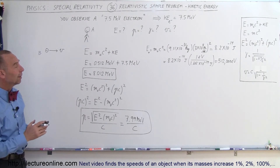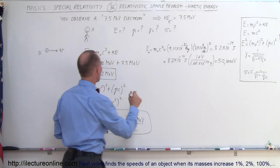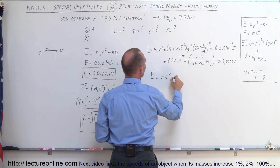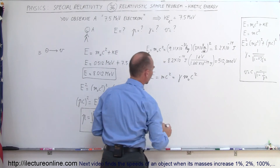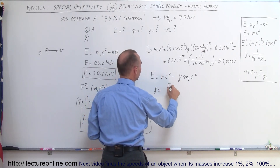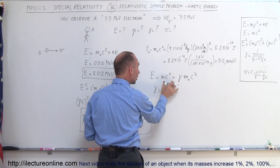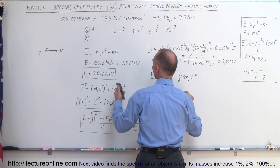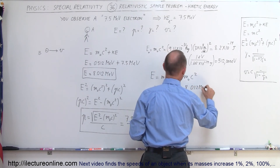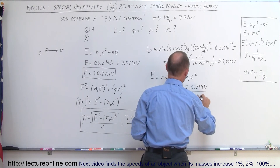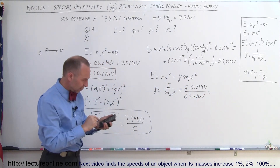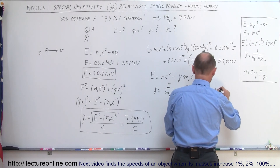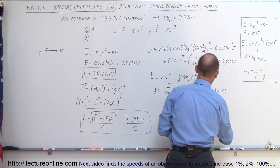Next we find gamma. From the equation, total energy E equals mc², which equals gamma times m₀c². Therefore gamma equals total energy divided by rest mass energy — it's the ratio of total energy to rest mass energy, and that's what the Lorentz factor means. The total energy is 8.012 MeVs and the rest mass energy is 0.512 MeVs, so 8.012 divided by 0.512 gives a Lorentz factor gamma of 15.65 — just a dimensionless number.